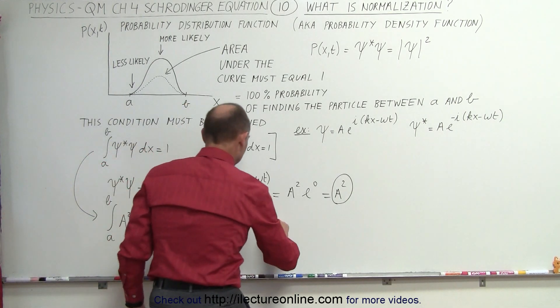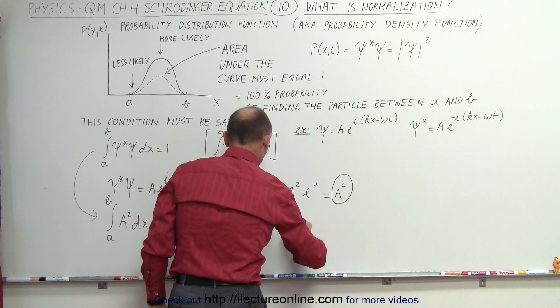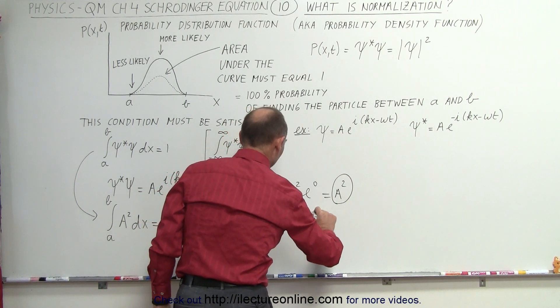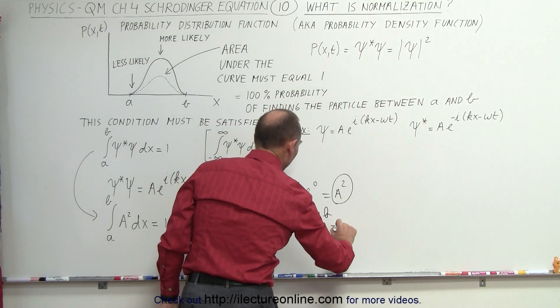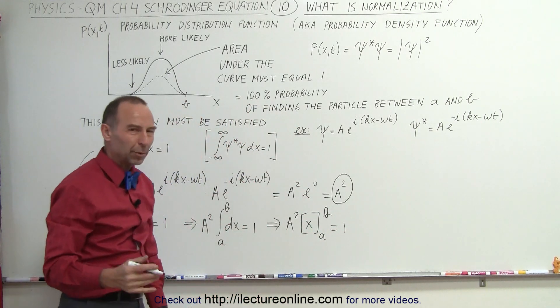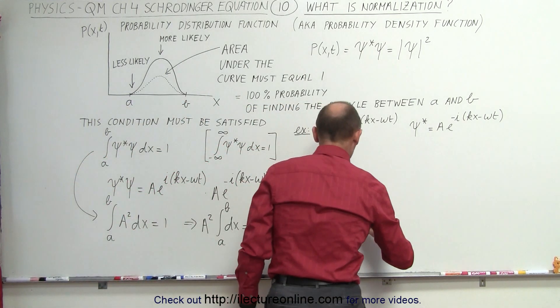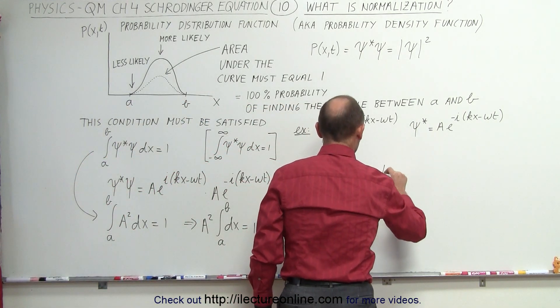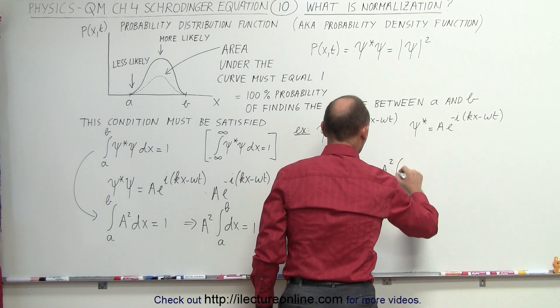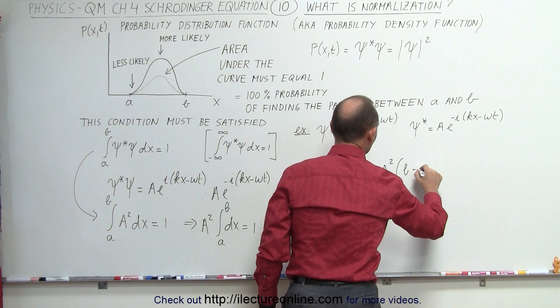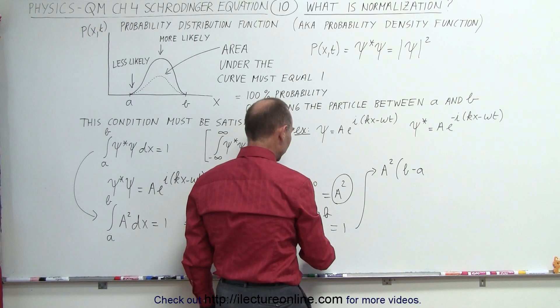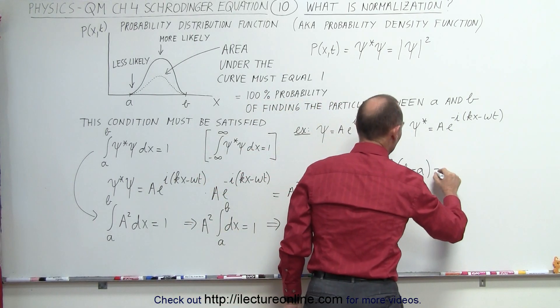And when we integrate that, that then becomes a squared times x, evaluated from a to b, must equal one. Of course, then we plug in the upper and lower limit, and we get a squared times b minus a, plug in the upper limit, minus when you plug in the lower limit, equals one.